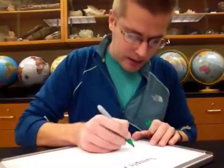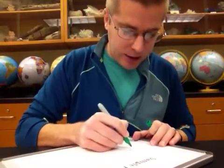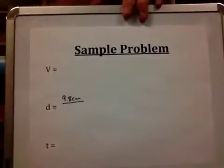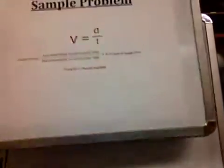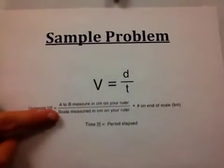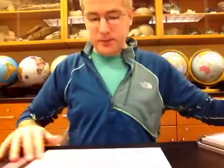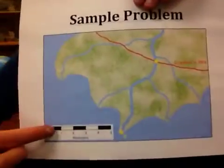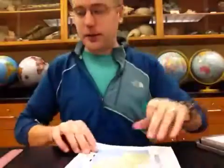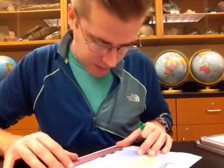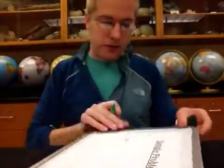We want to write that down and set it up as a fraction, so a to b goes on top. The next thing we need to measure to figure out the distance is the scale with our ruler in centimeters on the map. We measure all the way across the entire scale and find that it is 7.9 centimeters. So we write that on the bottom of the fraction.